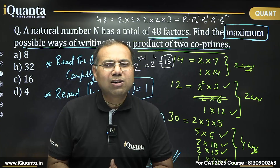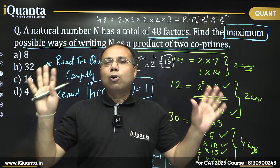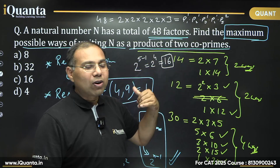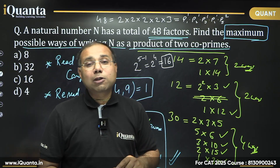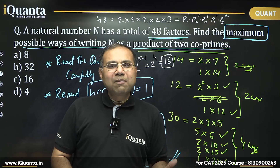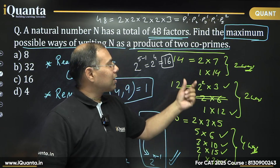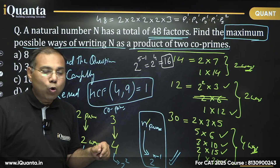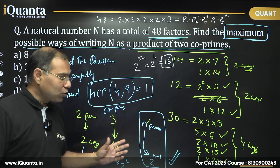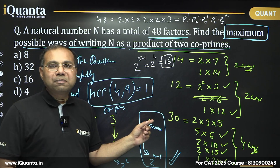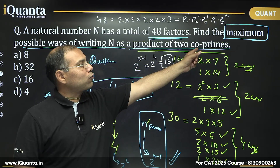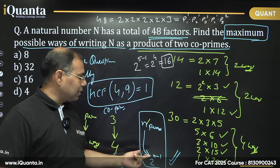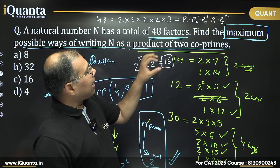This was a multi-layered question. We discussed what co-prime numbers are — two numbers whose HCF is 1. We found that the number of ways to write a number as a product of two co-primes depends on how many distinct prime numbers it contains. With two primes there are two ways, with three primes there are four ways, and in general with n primes the answer is 2^(n−1).